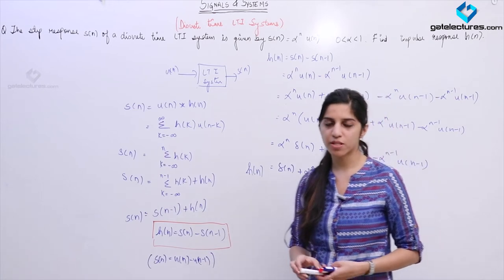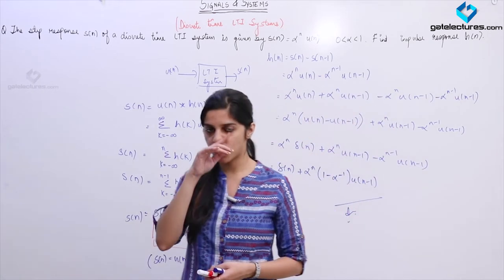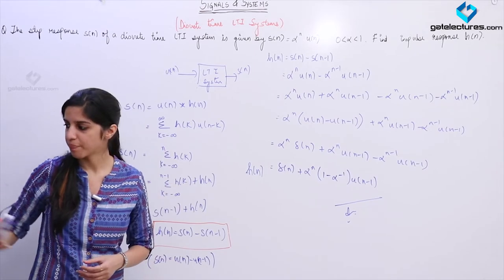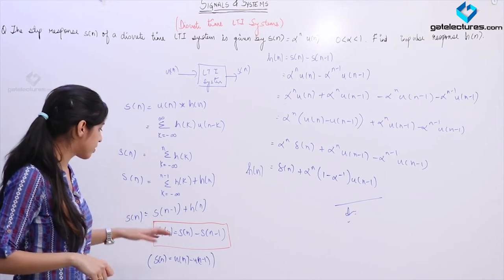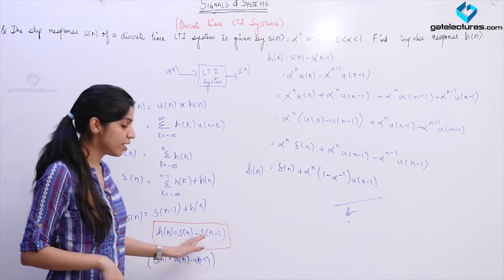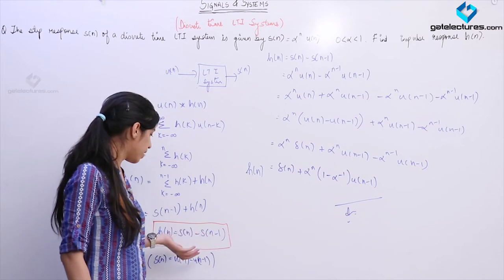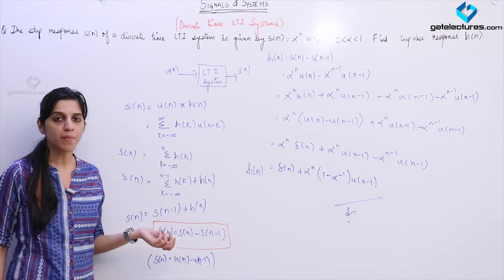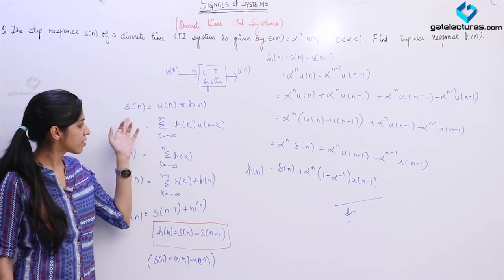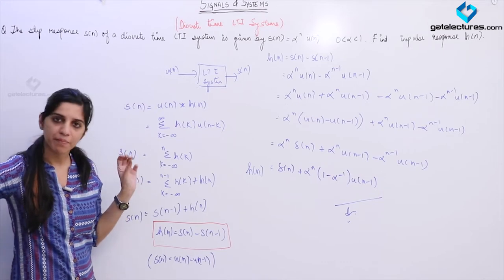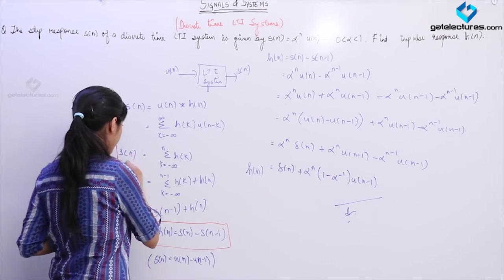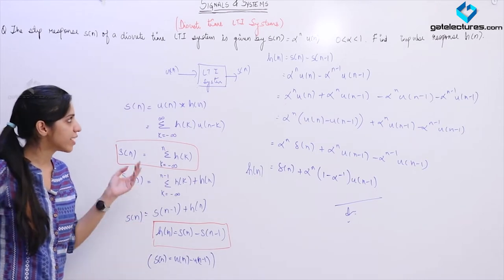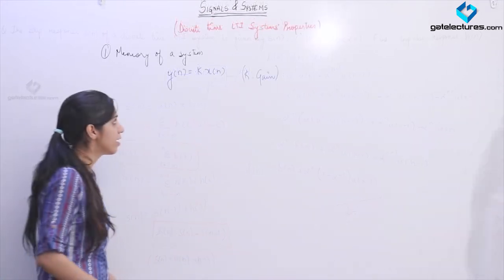So if you are given the step response of a system, you can obtain the impulse response by using the difference equation, and in case of continuous time systems by differentiating the step response. This is the relation between impulse response and step response of a system. Similarly, if you want to obtain the step response of a system using its impulse response, you perform the summation operation: S(n) is the summation of the impulse response from minus infinity to n.